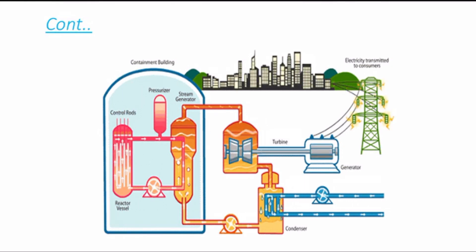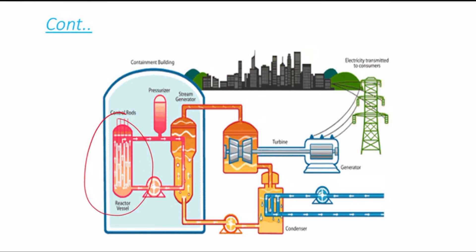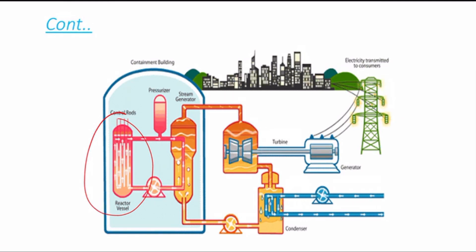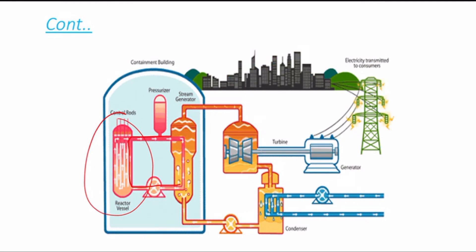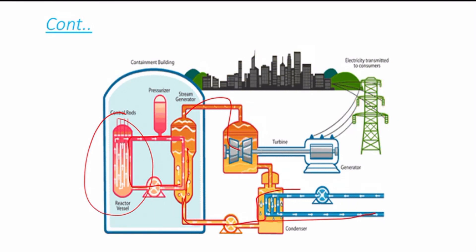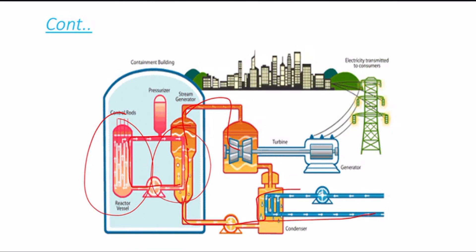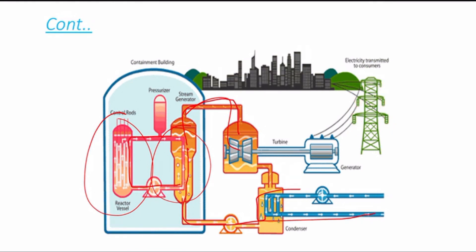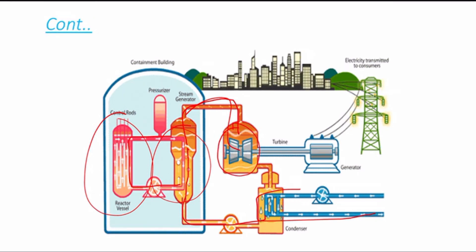You can see here the control rods, where the chain reaction will happen, and the coolant passing through. Here you can observe the water flowing; because of the heat exchanger, the water is converted into steam. The steam with high pressure is passed through the turbine, where it rotates the turbine blades, which are coupled to a generator.